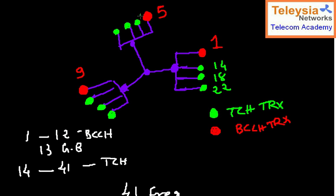Continuing the TCH frequency plan for other sectors: I can use 24, 28, 32 in one sector, then 36 and 40 in the next. I cannot use 44 because my allocation only goes up to 41.